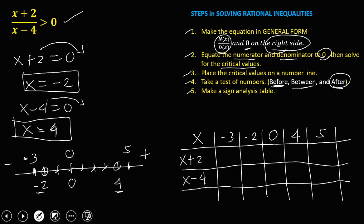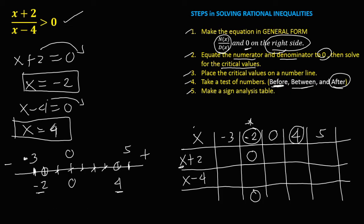Substitute first the critical values into the numerator and denominator — one of the equations becomes 0. If x equals negative 2, then negative 2 plus 2 is 0. If the numerator equals 0, the answer is always 0. Then for x equals 4, so 4 minus 4 gives a 0 denominator, which is undefined or error.